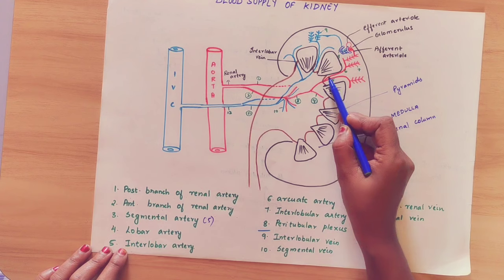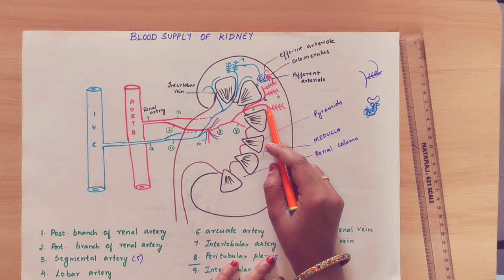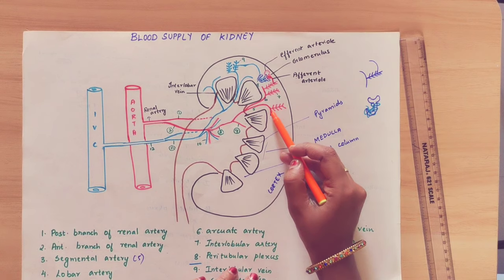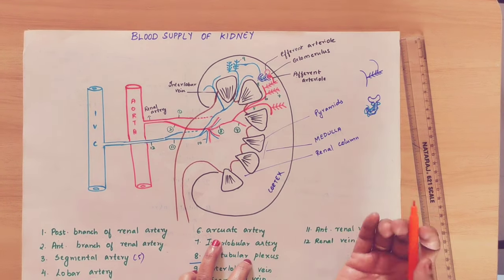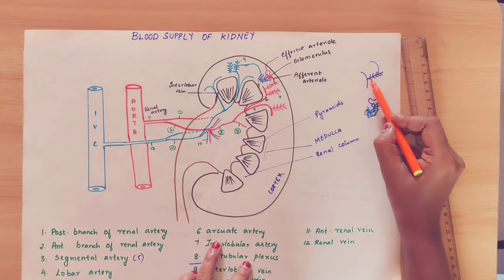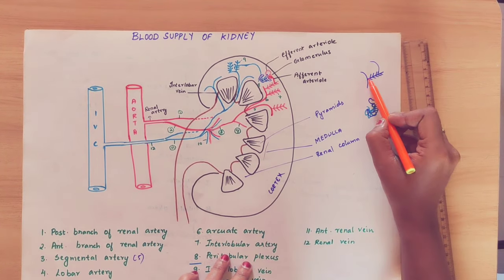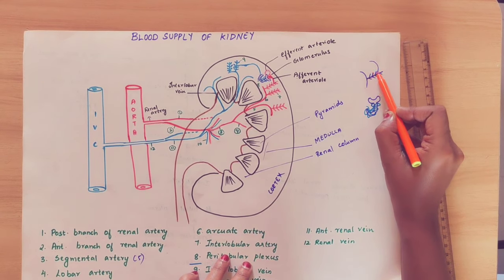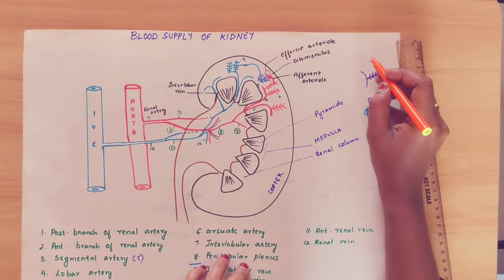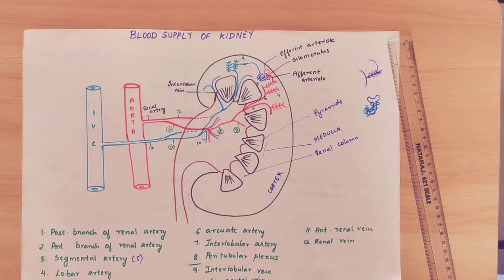The interlobar artery then forms an arch, which is called the arcuate artery. The arcuate artery is formed at the junction of cortex and medulla, and it gives a branch called the afferent arteriole.